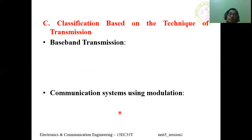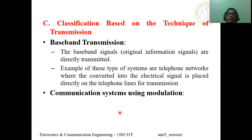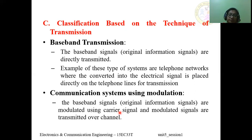Based upon the technique of transmission, we can classify into baseband transmission and communication systems using modulation. In baseband transmission, the original information signal is transmitted directly — for example, telephone networks where the voice signal is converted into an electrical signal and placed directly on the telephone line. In a communication system using modulation, which is a broadband system, the baseband signal is modulated with a high-frequency carrier signal and then placed on the communication channel.